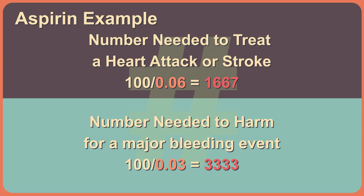Last week I told you that the NNT for aspirin to prevent a first heart attack or stroke was 1,667. But the NNH is 3,333 for a major bleeding event. Granted, the chance of you having a benefit is greater than that of a harm, but the harms are real.